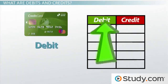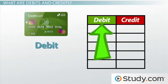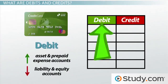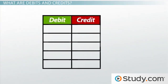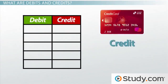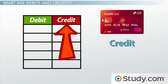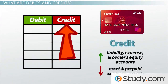Debits and credits are both forms of notation that are used in accounting to keep the balance in accounts. A debit is an entry on the left side of the T-account that increases asset and prepaid expense balances and decreases liability and equity account balances. A credit, the opposite of a debit, is an entry on the right side of the T-account. It increases liability, expense and owner's equity accounts and decreases asset and prepaid expense accounts.